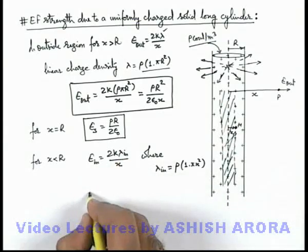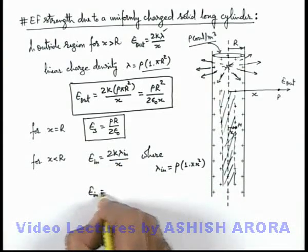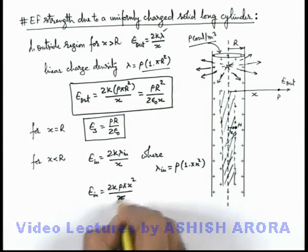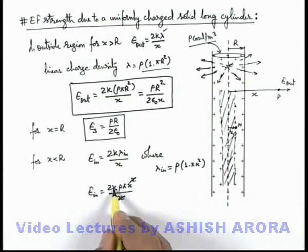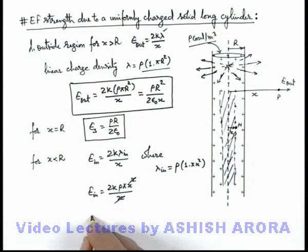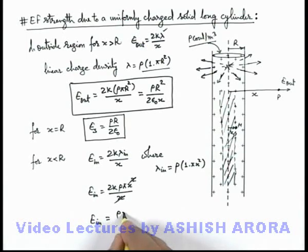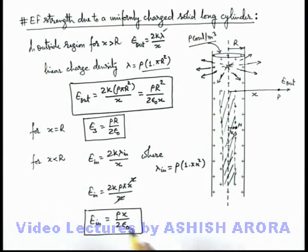If we substitute here, E inside will be 2k ρπx²/x. Here x gets cancelled out and we substitute the value of k as 1/4πε₀. Inside electric field here we can see it is given by ρx/2ε₀. This is the result we are going to use.